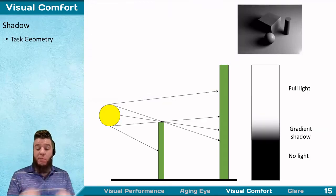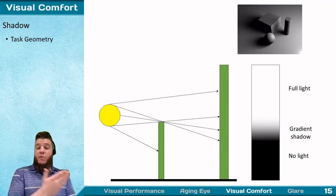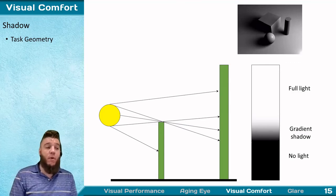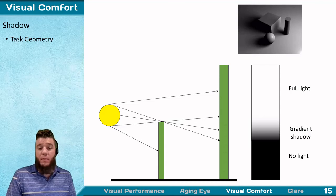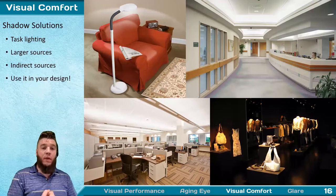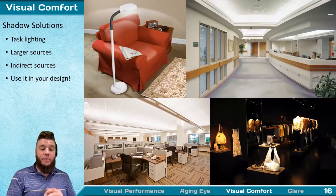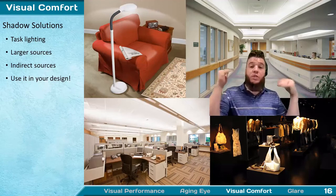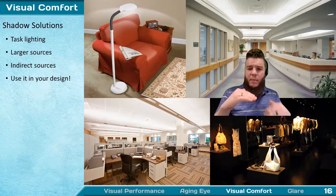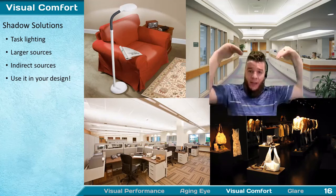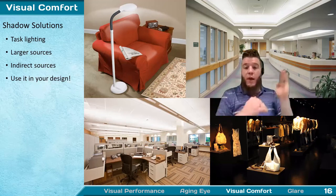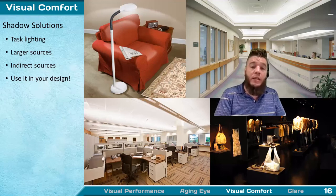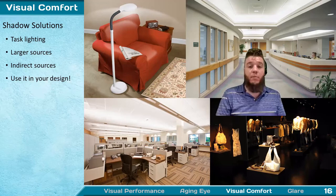More typically, rather than a hard point source, you'll have an area source. An area source leads to softer shadows and makes shadowing less problematic overall. For solutions to shadowing in architectural environments, the big options are larger sources and indirect sources. Indirect lighting inter-reflects light throughout the space — light isn't coming from one angle, it's bouncing off the ceiling from a whole bunch of angles, filling in the gaps and creating a soft, shadowless ambient fill light. Ambient lighting is really one of the main solutions to shadow problems.